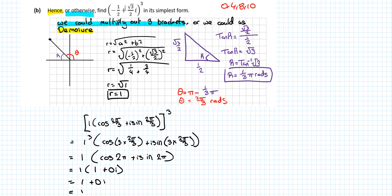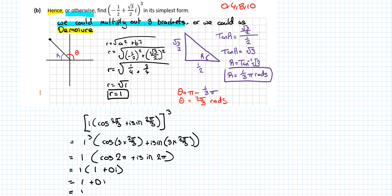First of all we need to change it to polar form. The first thing in changing to polar form is to draw out an Argand diagram. We know it's going to be minus on the real axis because it's minus a half, and positive on the imaginary axis because of the root three over two. We need the modulus — using the modulus formula, the distance from the origin — which works out to be one.